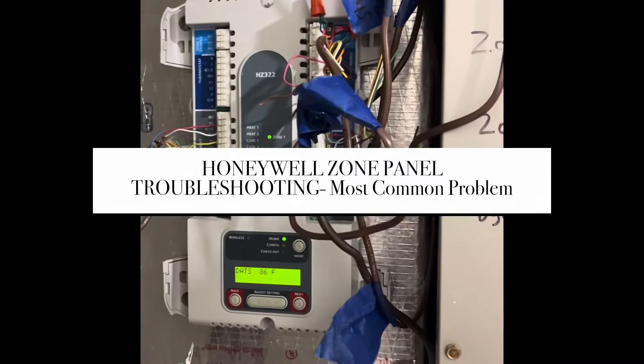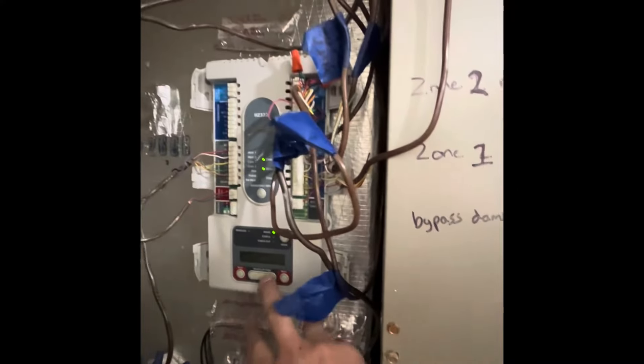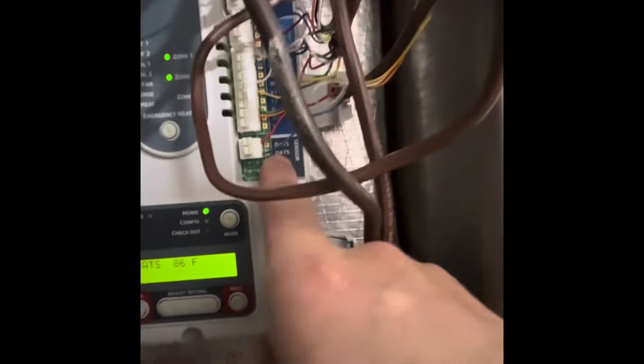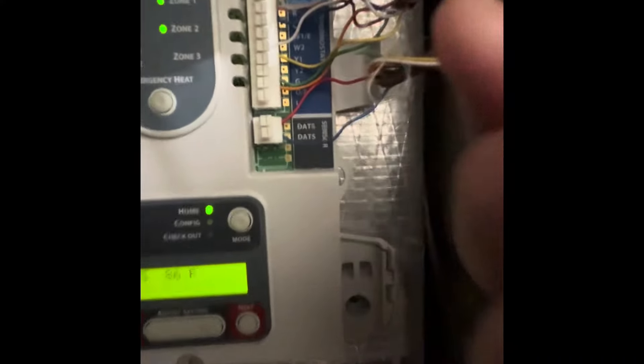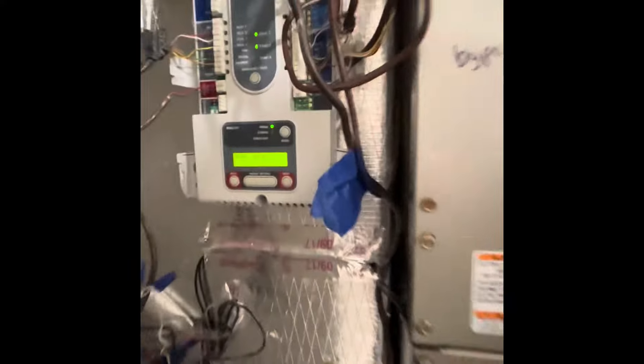We're looking at our zone panel here, and the most common problem with our zone panel is this DTS. It's for the data sensor. These two wires run up to a sensor in an attic.